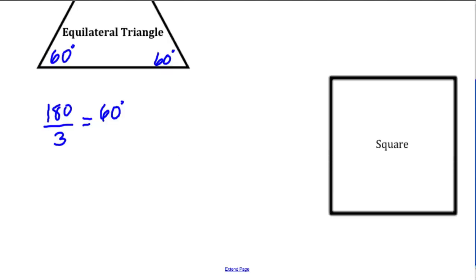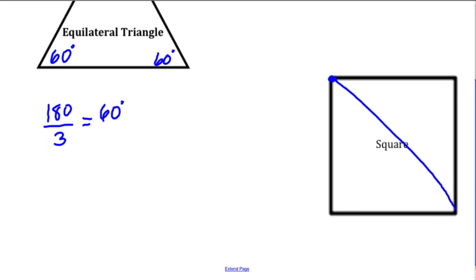This is where the trick comes in — it's a pretty cool thing. Let's say you don't know what the angles of a square add up to. If we pick a common vertex and divide the square, it becomes two triangles. There are two triangles inside of a square. All of those angles add up to 180 degrees for each triangle, so two times 180 degrees is 360 degrees.